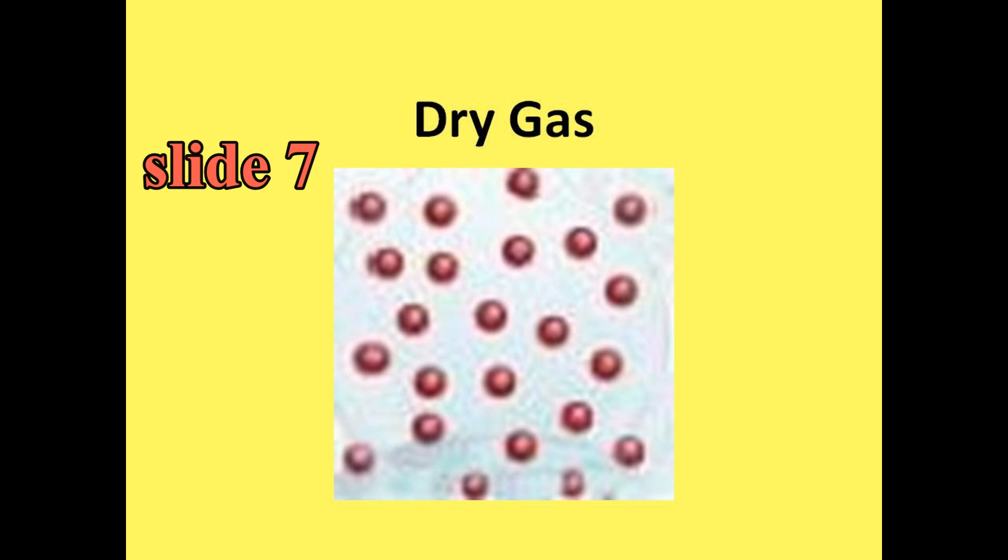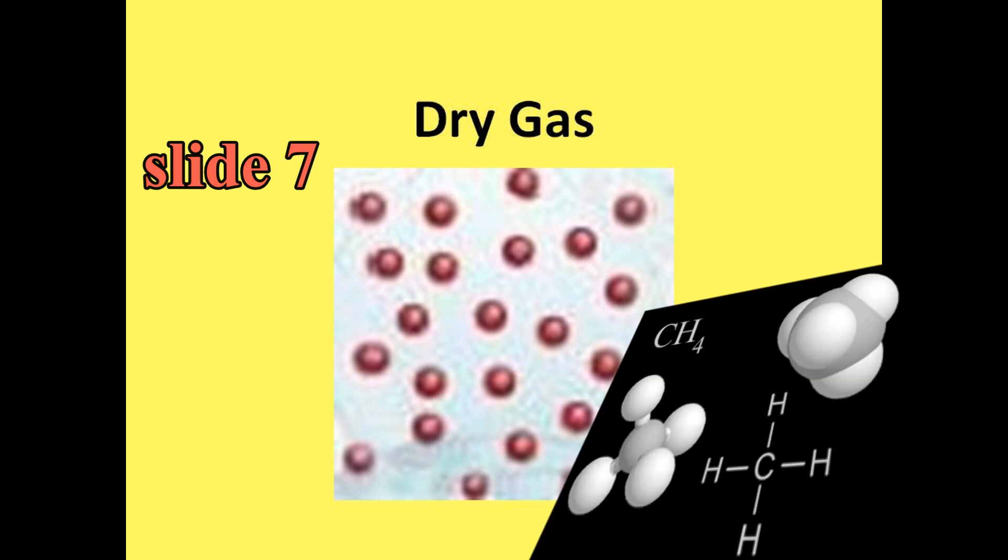Slide seven represents the classification of dry gas. Made up mostly of methane, dry gas produces no condensate. Notice here that there are no numbers for API gravity, nor mu. API gravity approaches infinity, and mu approaches zero. Because there are no liquids, beta and RS are meaningless.